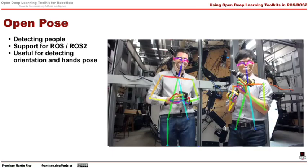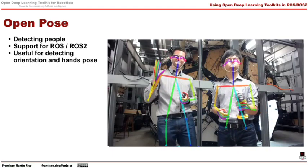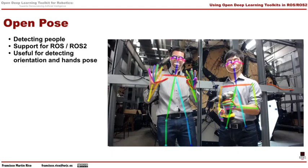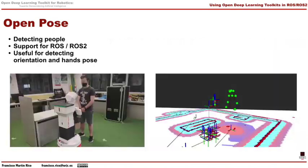OpenPose is software that uses deep learning to detect the skeleton of people. It can even detect fingers, as you can see. We have combined this info with a 3D camera to transfer these keypoints from 2D to 3D. This is very useful, for example, to detect the person's orientation while following.